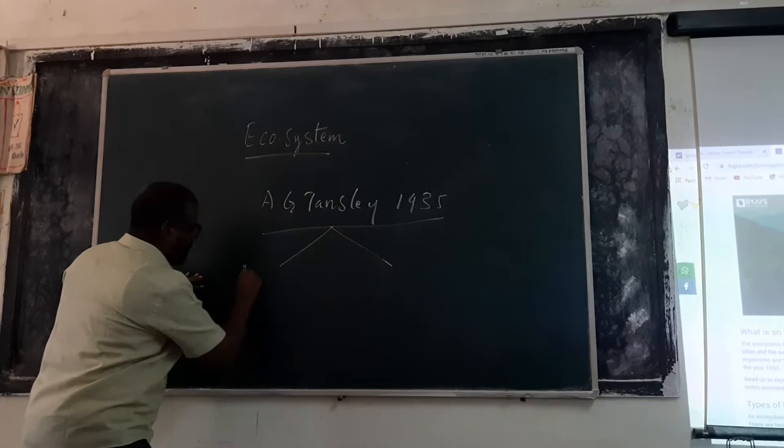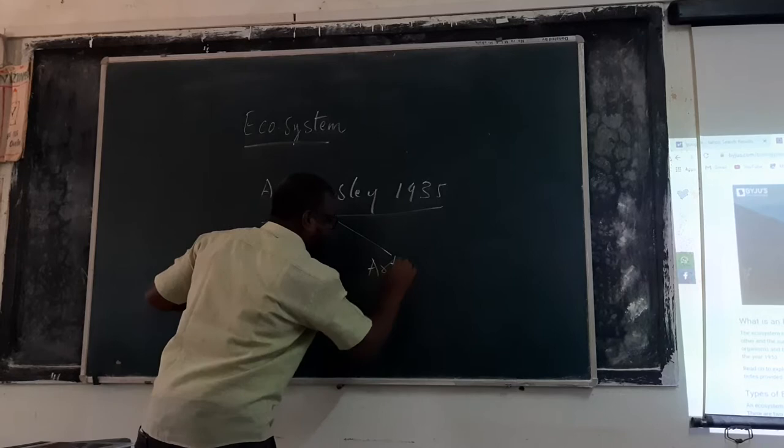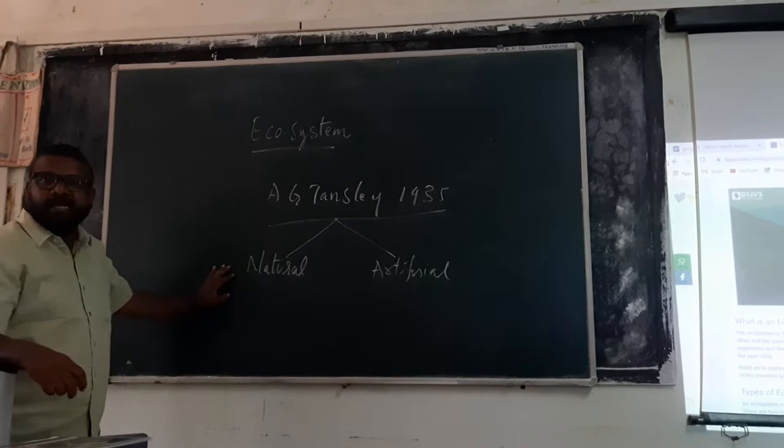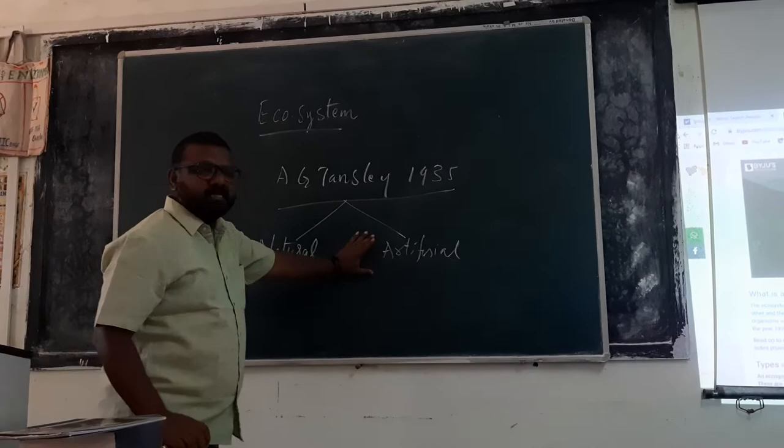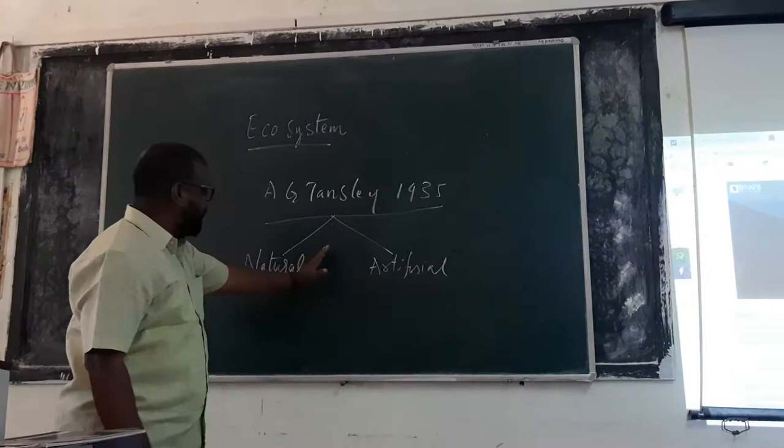One is called as natural ecosystem and another one is called as artificial ecosystem. Natural ecosystem means without the interference of man, this ecosystem has been produced. With the interference of man, some ecosystems have been produced — that is called as artificial ecosystem.